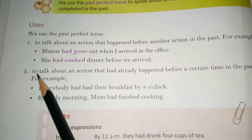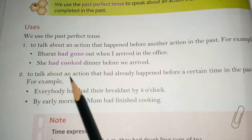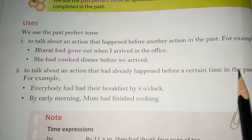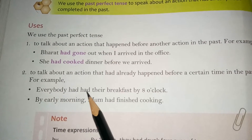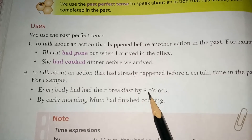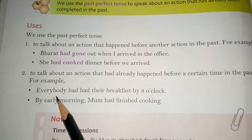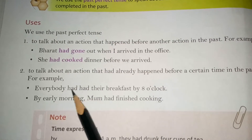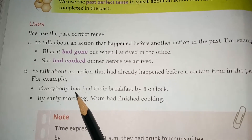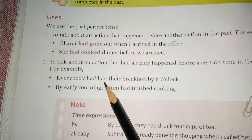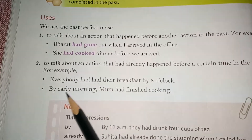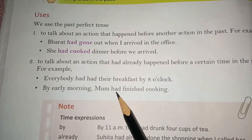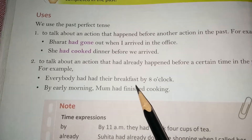We also use past perfect tense to talk about an action that had already happened before a certain time in the past. For example, everybody had had their breakfast by 8 o'clock — one 'had' is the helping verb and another 'had' is the main verb. By early morning, mum had finished cooking — 'had' is the helping verb and 'finished' is the main verb.